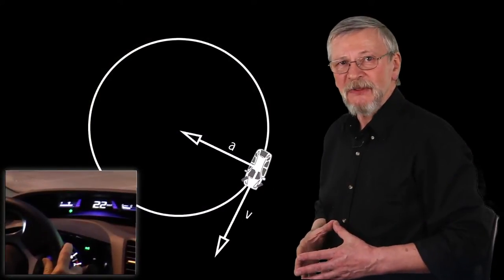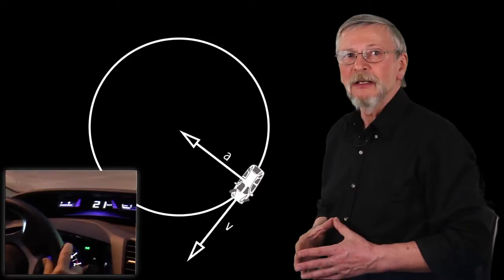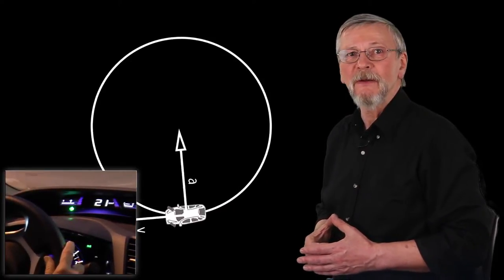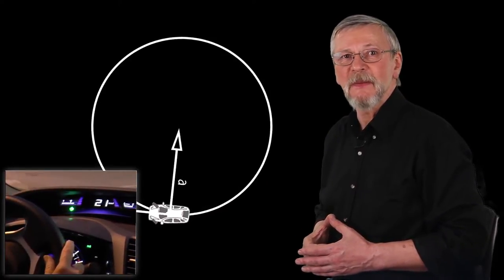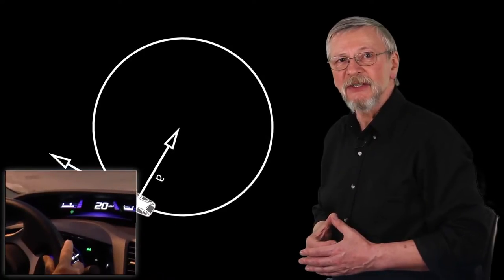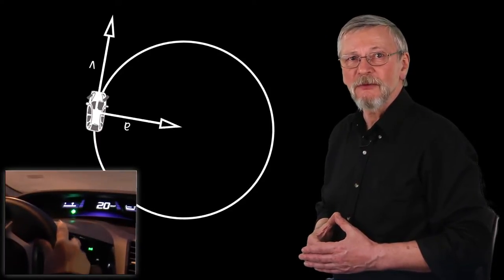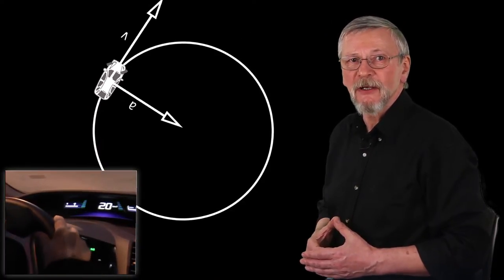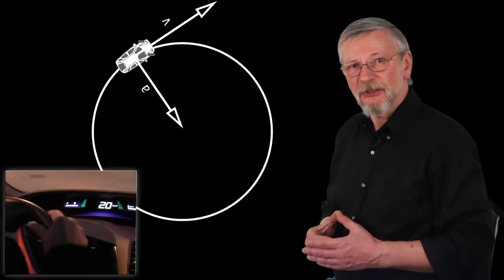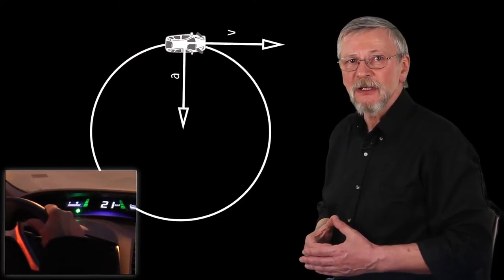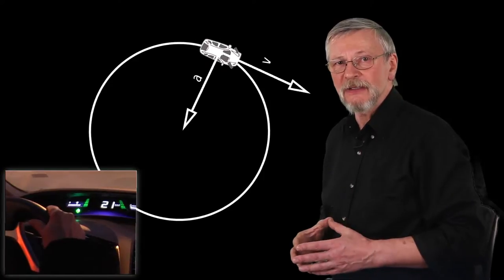An interesting example is a car moving with constant speed along a circumference. While its speed remains the same, its velocity is constantly changing because it is accelerating. This acceleration is normal to the direction of movement of the car in each given moment, which is to say it is directed along the radius toward the center of the circumference.